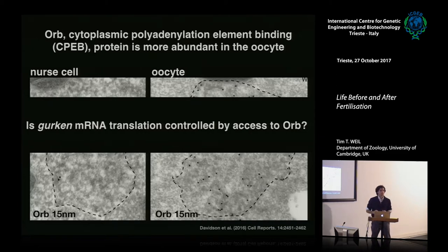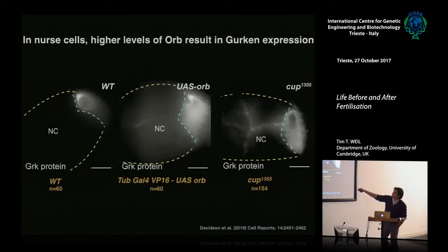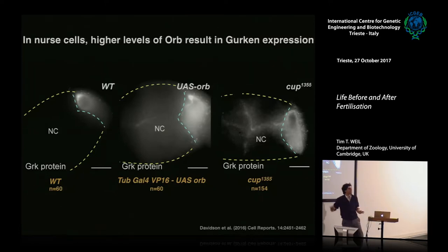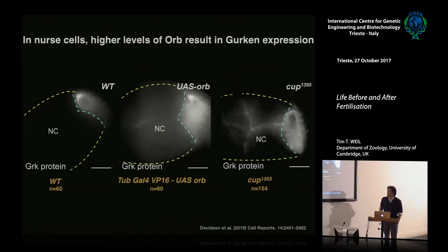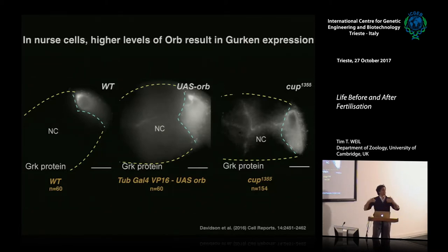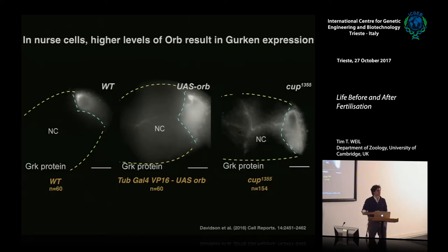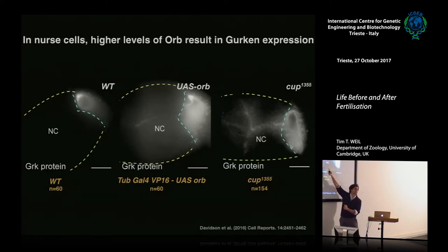This led us to propose that translation of gurken RNA is controlled by access to the translational activator ORB. To test this, we drove ORB expression in nurse cells. In the wild type, gurken protein is only present in the oocyte at the dorsal anterior. When we overexpressed ORB — normally not on in nurse cells — using a Drosophila genetic trick, gurken protein was now present in nurse cells and visibly secreted to the membranes. When we knocked out the repressor of ORB to get ORB expression, gurken was translated and secreted to nurse cell membranes.